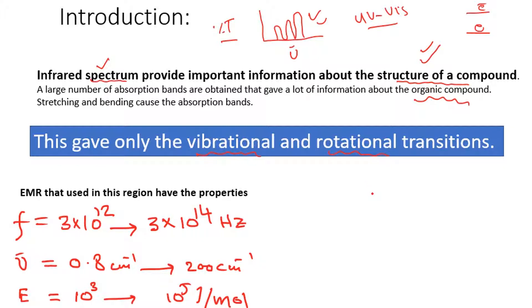Rotational and vibrational transitions mean that molecules exist in different forms of bonding — the molecules vibrate or rotate. For example, in a carbon monoxide molecule, the atoms vibrate or rotate within the bond. We will further study the types of rotational and vibrational motions.